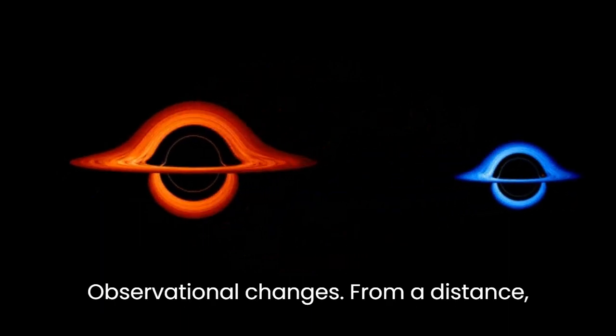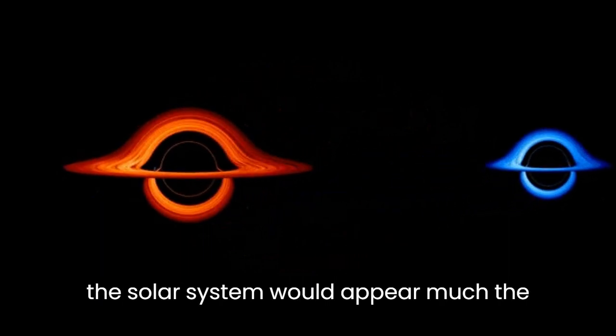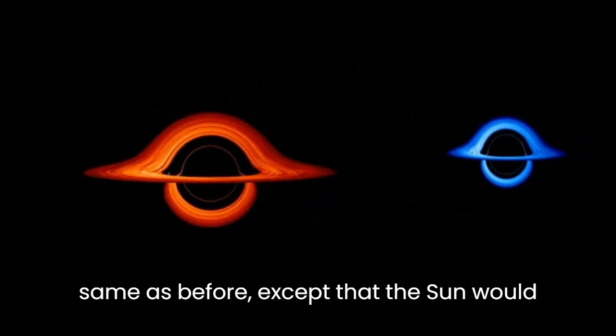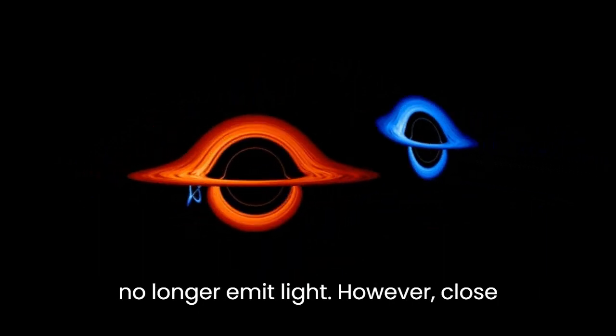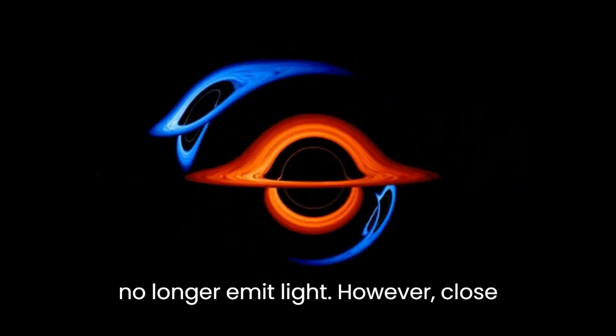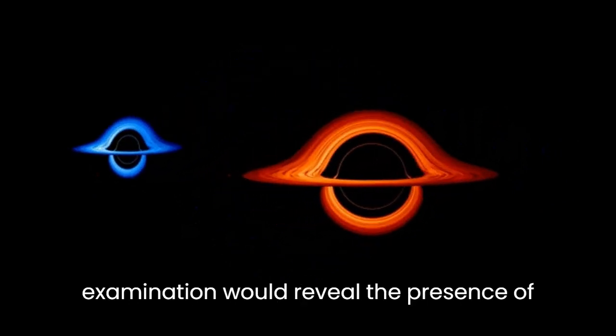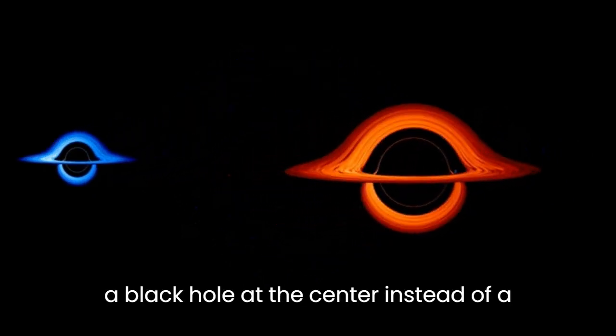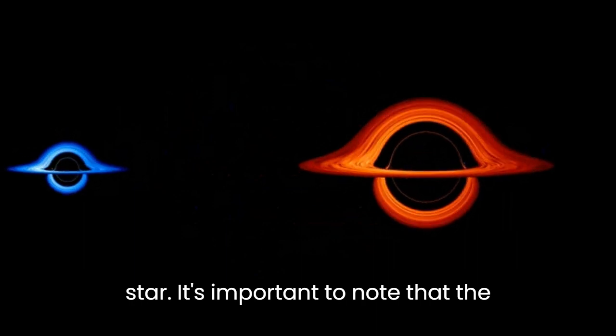Observational changes. From a distance, the solar system would appear much the same as before, except that the Sun would no longer emit light. However, close examination would reveal the presence of a black hole at the center instead of a star.